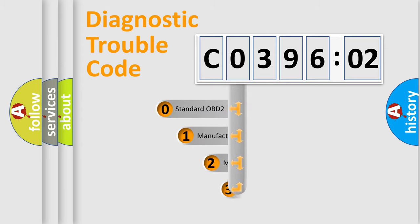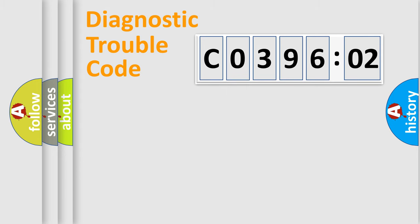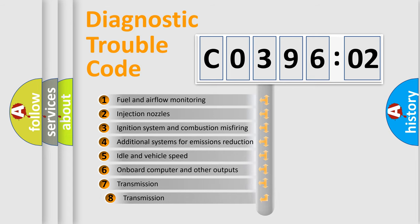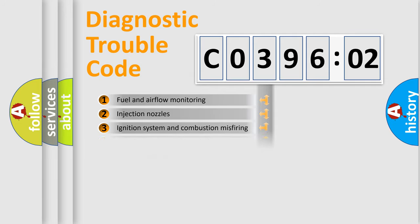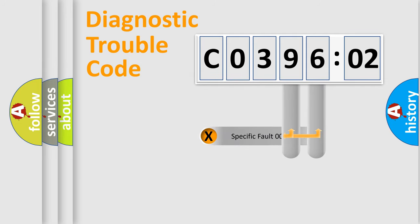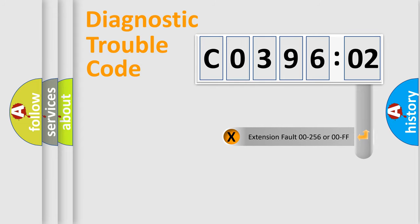This distribution is defined in the first character of the code. If the second character is expressed as zero, it is a standardized error. In the case of numbers 1, 2, or 3, it is a more specific expression of a car-specific error. The third character specifies a subset of errors. The distribution shown is valid only for the standardized DTC code. Only the last two characters define the specific fault of the group. The add-on to the error code serves to specify the status in more detail.